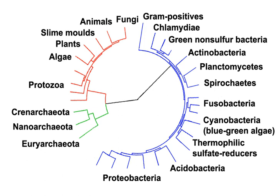According to the Woese system, introduced in 1990, the tree of life consists of three domains: Archaea, Bacteria, and Eukarya.